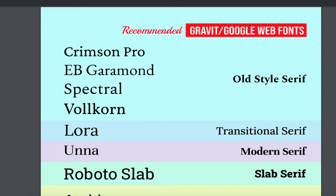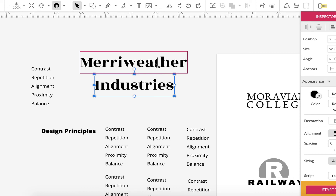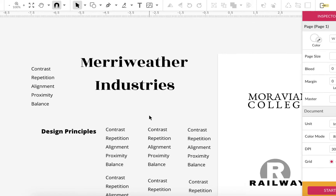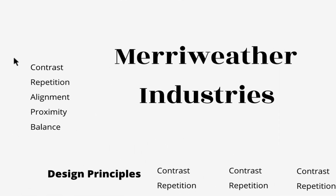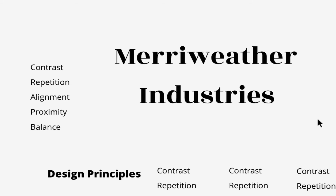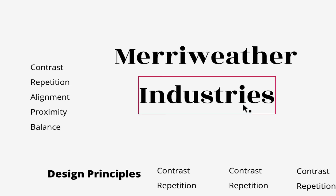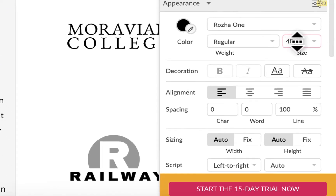Before changing the font, let's look at this as a logo to understand how design principles work. Right now what kind of hierarchy do we have between these two lines? None — they're basically the same size and nothing takes precedence. In a logo you typically want something to take precedence. 'Meriwether' is the company name — it should be primary. 'Industries' is a descriptor — it should be secondary. So you could take that and make it smaller.